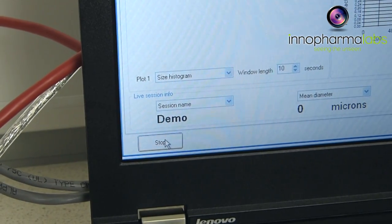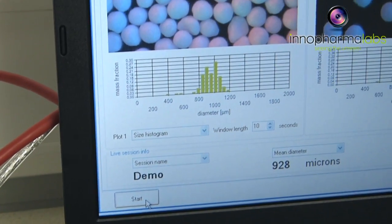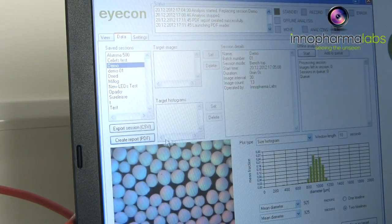When the analysis is completed, the process is stopped and a mass fraction histogram of the measured particles is generated.